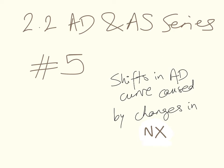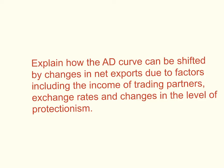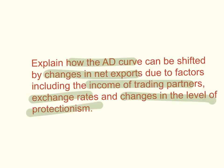This will be video number 5 of the Aggregate Demand and Aggregate Supply Series, which is part of the IB Economics Macroeconomics Syllabus Unit 2.2. In video number 5, I will talk about shifts in the aggregate demand curve that are caused by changes in net exports. The learning outcome for this video is to explain how the aggregate demand curve can be shifted by changes in net exports due to factors that include the income of trading partners, exchange rates, and changes in the level of protectionism.